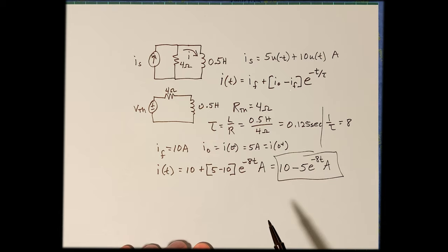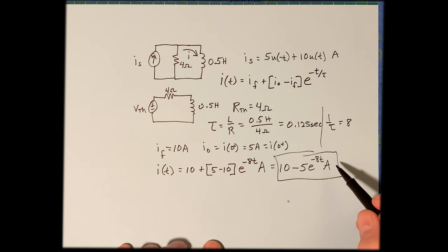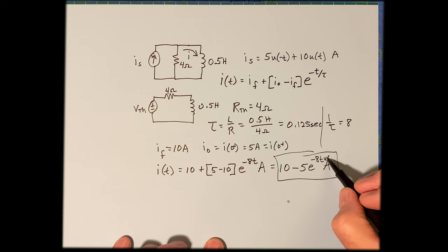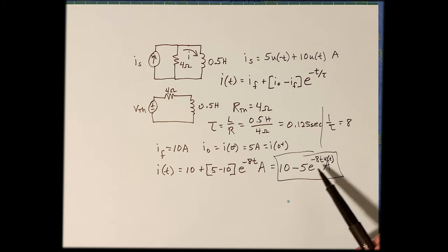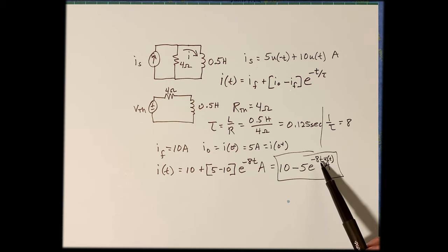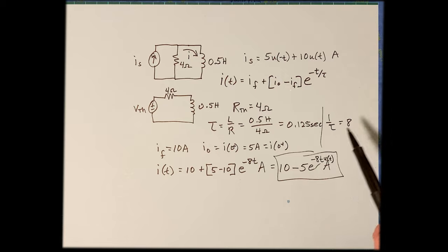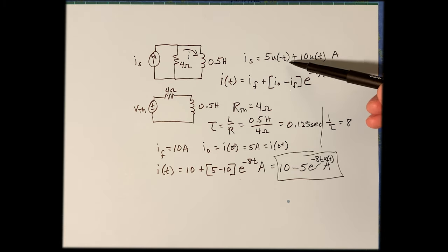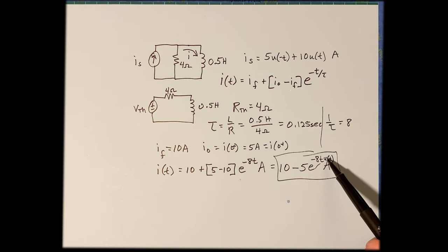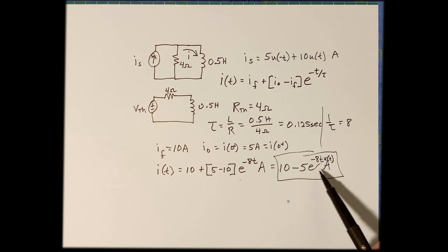We need to include a singularity function. Before T=0, U(T)=0, so the exponential evaluates to 1, giving 10 − 5 = 5 amps — exactly the expected initial value. After T=0 it becomes 1 and follows the equation. So it checks out that the singularity function accompanies the T term here.